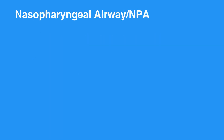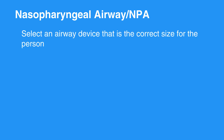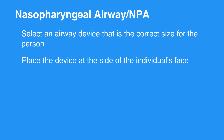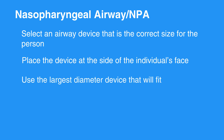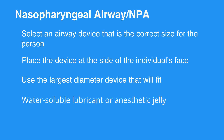To insert a nasopharyngeal airway, or NPA, select an airway device that is the correct size for the person. Place the device at the side of the individual's face and make sure to choose a device that extends from the tip of the nose to the earlobe. Use the largest diameter device that will fit.